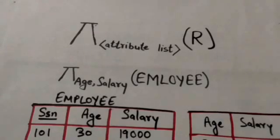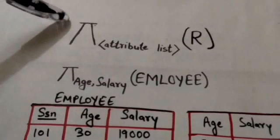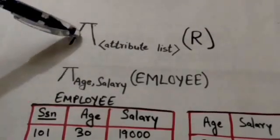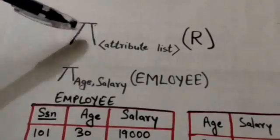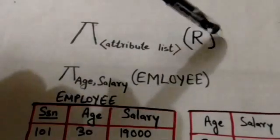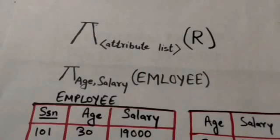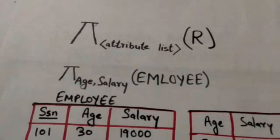The general form of the project operation is this. Here, the symbol pi is used to represent the project operation, and R is a relational algebra expression whose result is a relation. The simplest such expression is the name of a database relation.